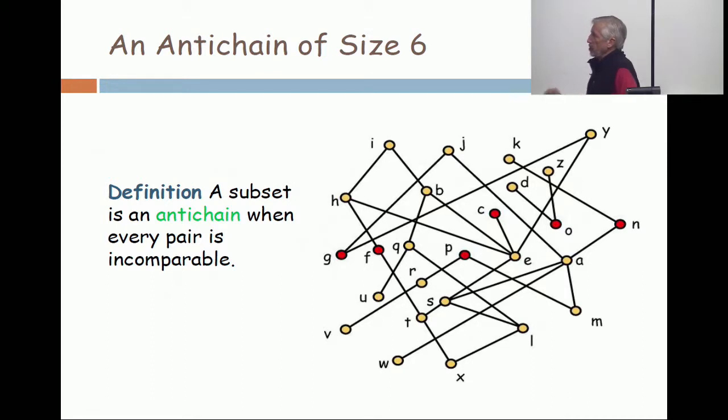You have to check that G is incomparable to F. You have to check that G is incomparable to P. You have to check that G is incomparable to C, etc. But if you check all fifteen of those statements, then you will see that every pair of distinct points in this six element set is an incomparable pair.